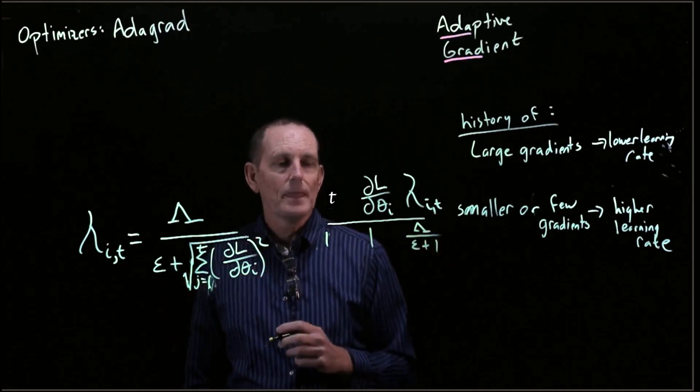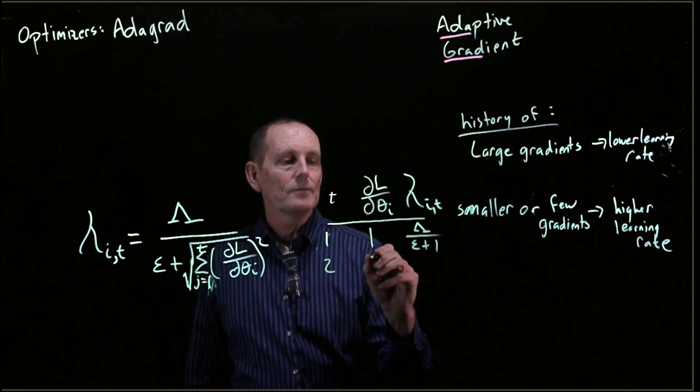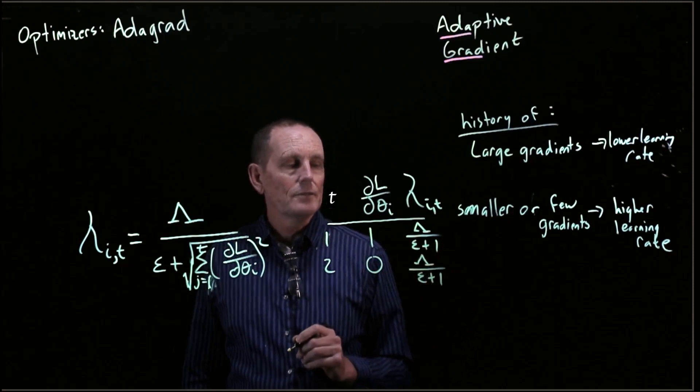Then we're going to have lambda over epsilon plus 1, right? 1 squared, square root is 1. Let's say at time step 2 we have no gradient. Our learning rate is going to remain the same.